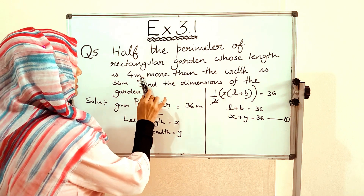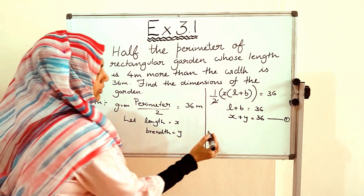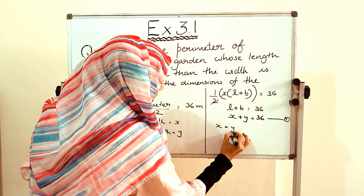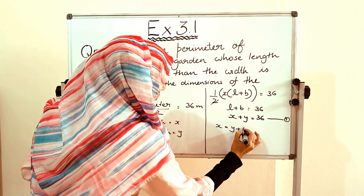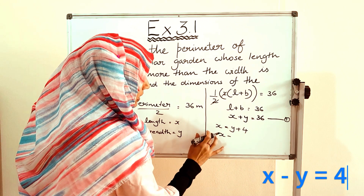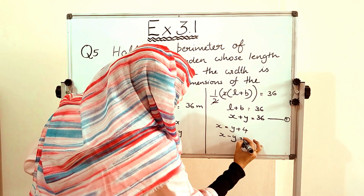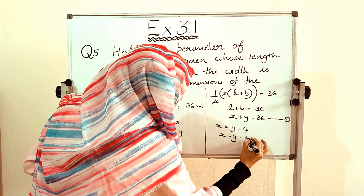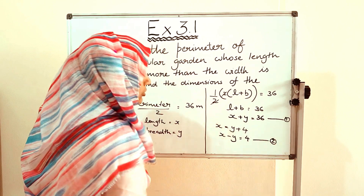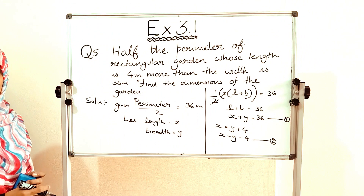It is given that length is 4 meters more than the breadth, so x = y + 4. Rearranging, x minus y = 4. This is our equation number 2. Let us draw a graph for these two equations.